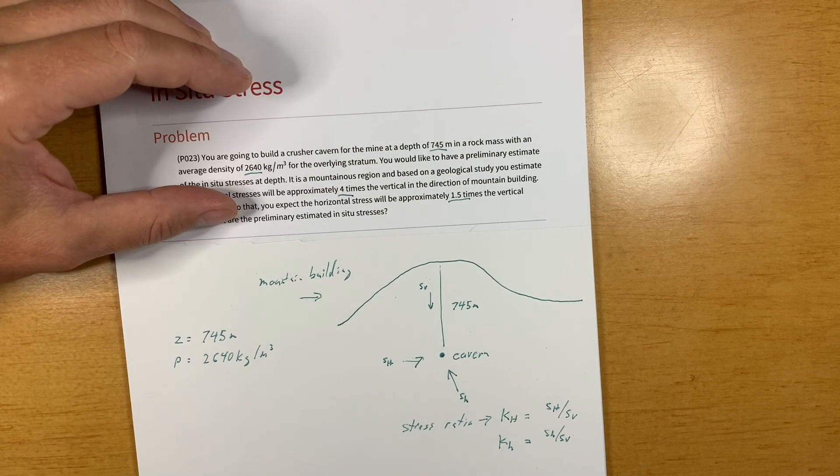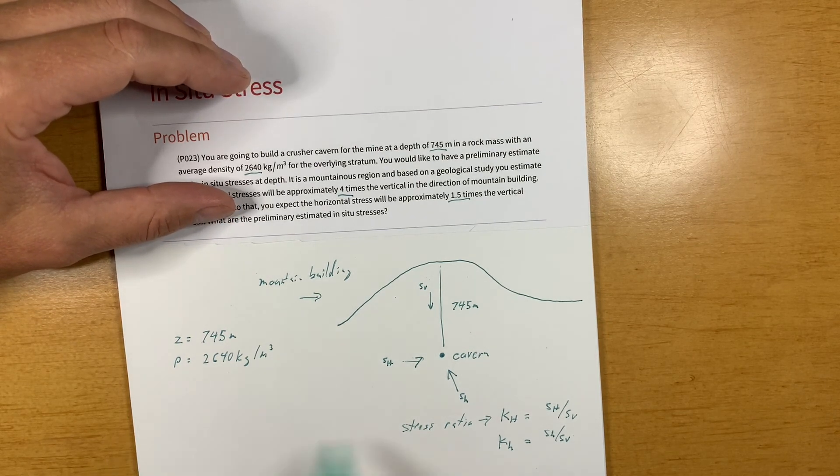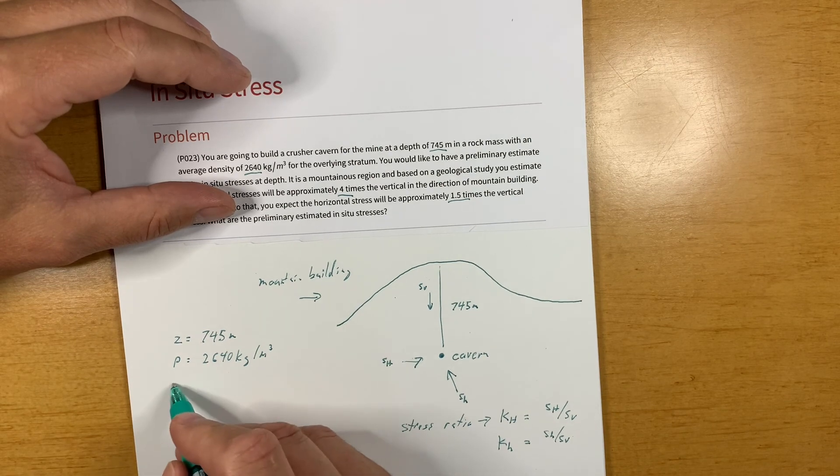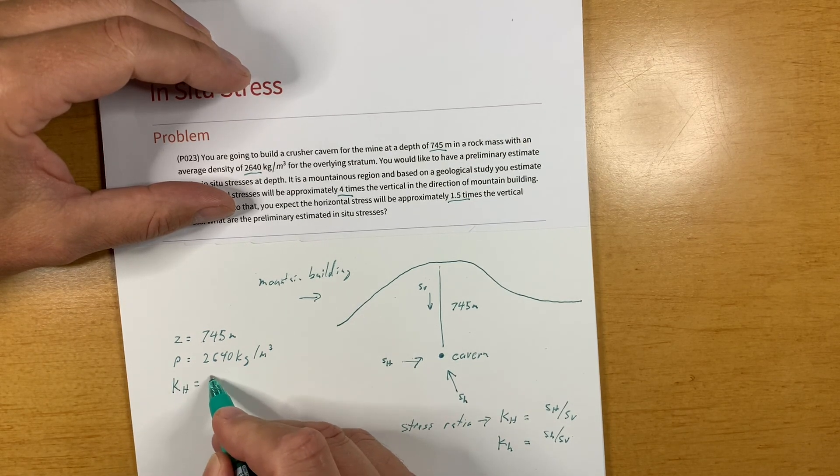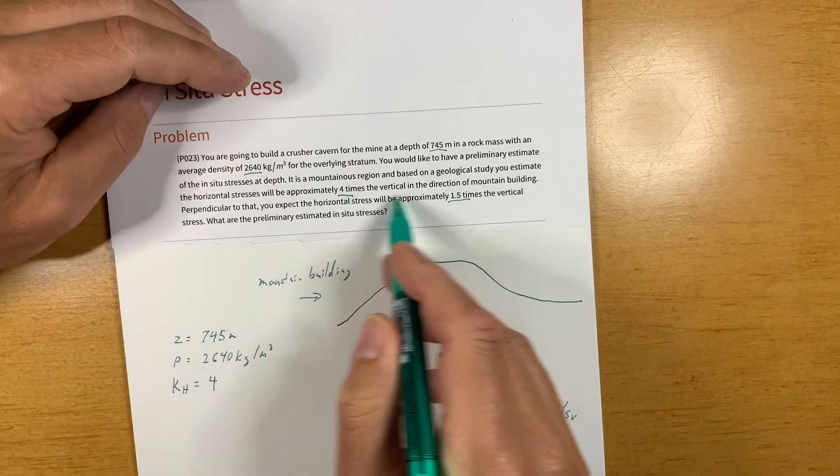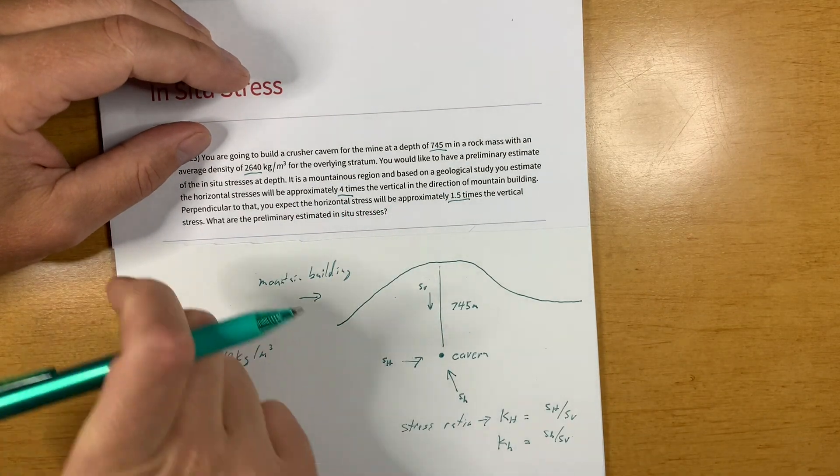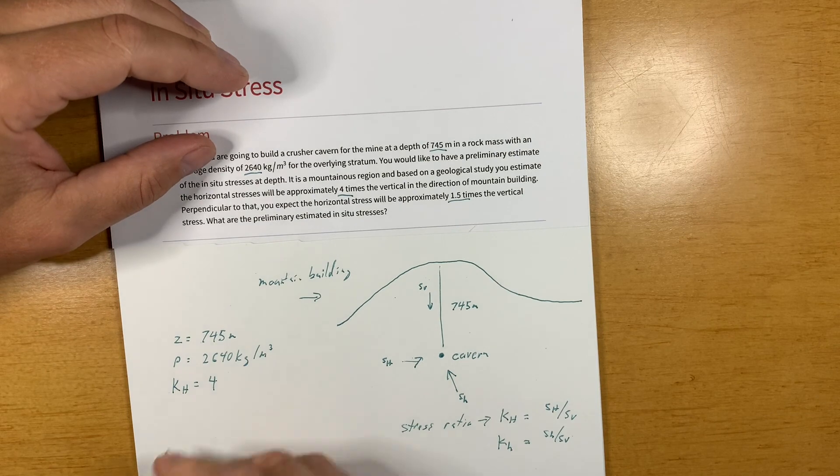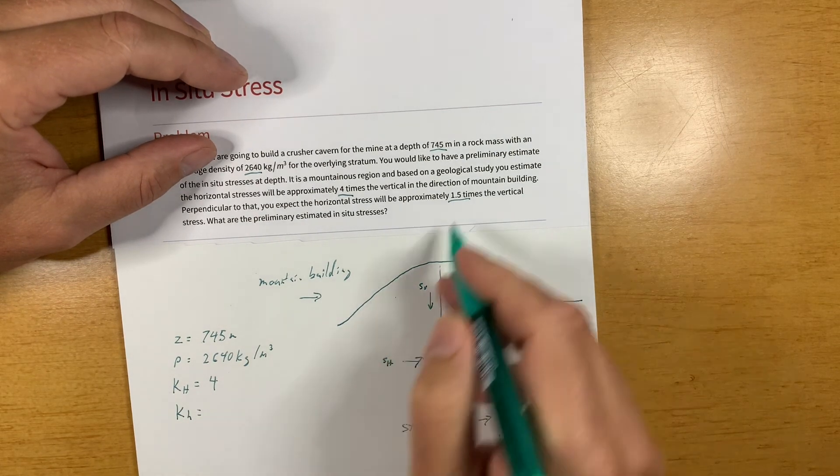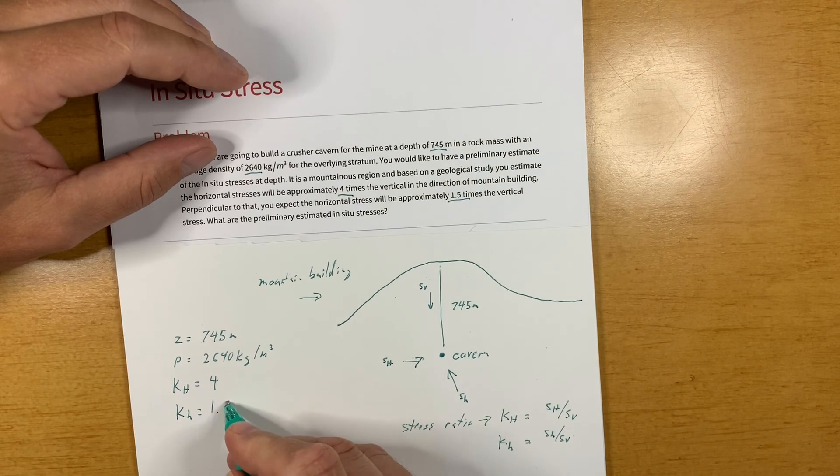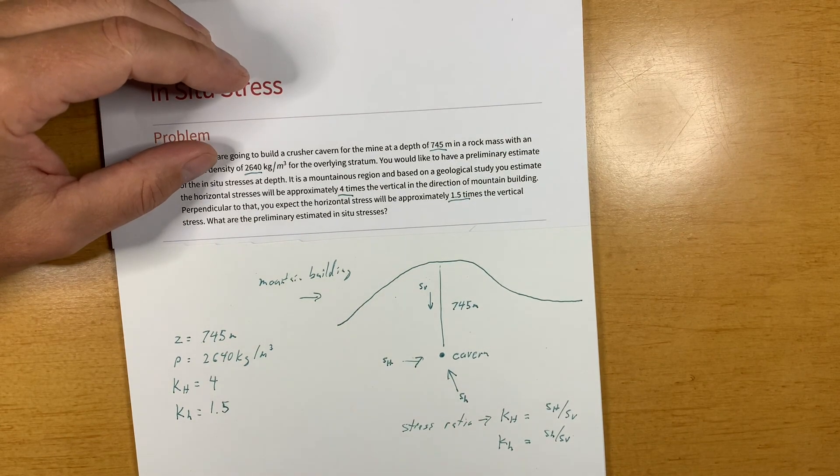So the K_H capital H in this case is four, we know it's four times right and it acts in the direction of mountain building, and the minimum K_h is 1.5.